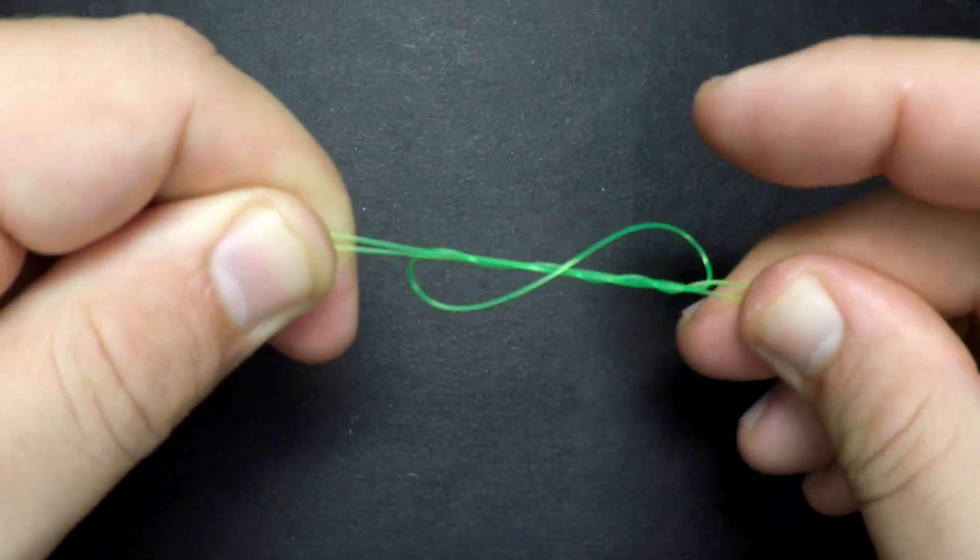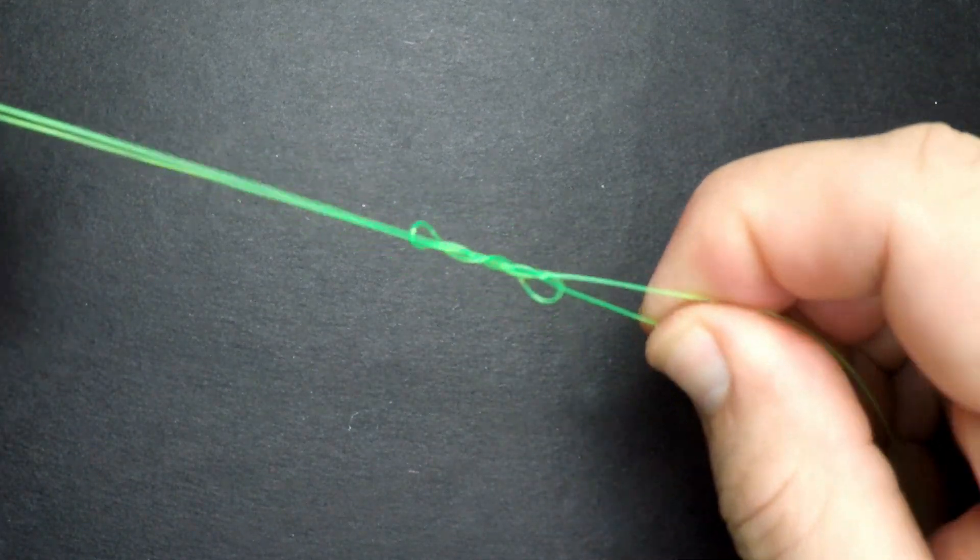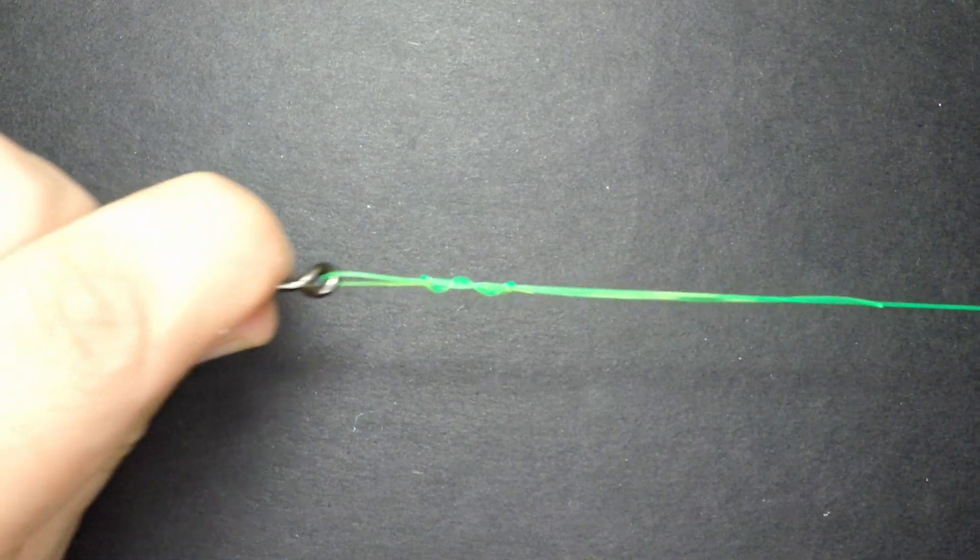Now that I've made my wraps, I'm going to start to pull the knot tight. Before pulling your knot all the way tight, be sure to wet it with some water or some spit so the knot slides together easier. Now I'm going to pull on the main line, causing the knot to come together.